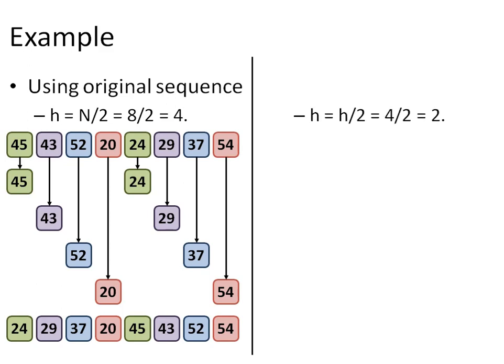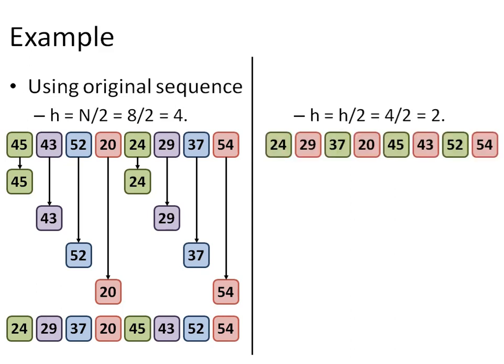After this, the interval gets reduced by half. So, now, we have h equals to h by 2 that is 4 by 2 will give us 2 now. That mean, every second element will be a part of the sublist now. So, there will be only 2 sublists.